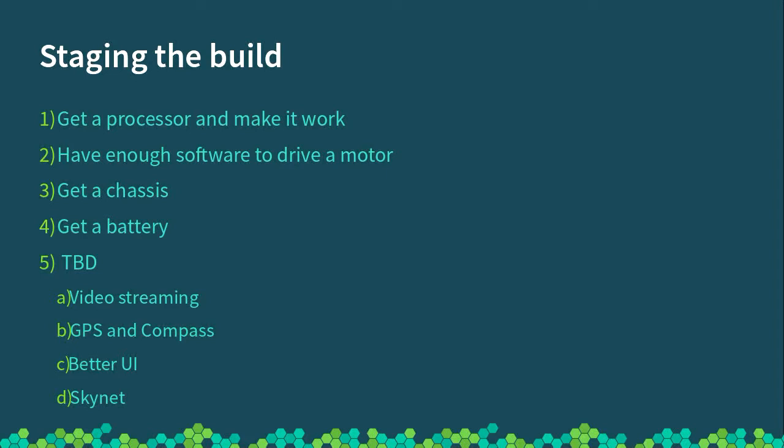As a rough idea of cost: the chassis was $150 to $200 — you can get bigger and smaller ones at different prices. The next most expensive thing is the battery at about $80. And then you have the Arduino, the screen, and so forth. I have a big long list of things I would like to do in the future. I also have a box of Meccano from a local secondhand shop so I can build more things on top. I want to do video streaming, give it a GPS and compass so it knows where it is, and write a better UI.